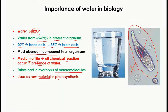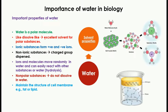Water is also used as a raw material in photosynthesis. In the process of photosynthesis, green leaves capture sunlight and combine carbon dioxide and water to form glucose and oxygen. So water is used as raw material in photosynthesis.